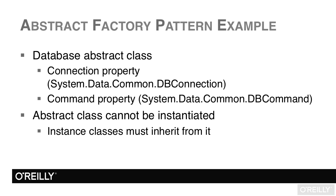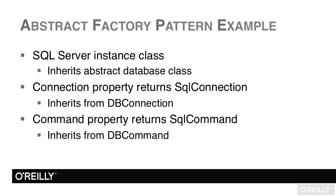An abstract class cannot be instantiated, so instance classes must inherit from it. We would have a SQL Server instance class that inherits from the database class. It will have a connection property, and although it is of type DbConnection in our abstract class, for our SQL Server class we'll return a SqlConnection — which inherits from DbConnection, obeying the interface of the abstract database class. Likewise, our command property will return a SqlCommand, and SqlCommand inherits from DbCommand, honoring the contract of the abstract database class.